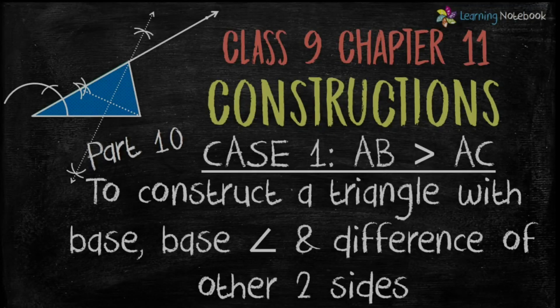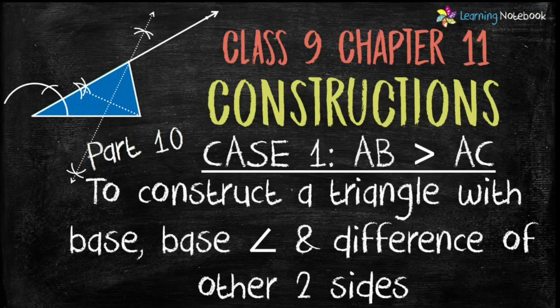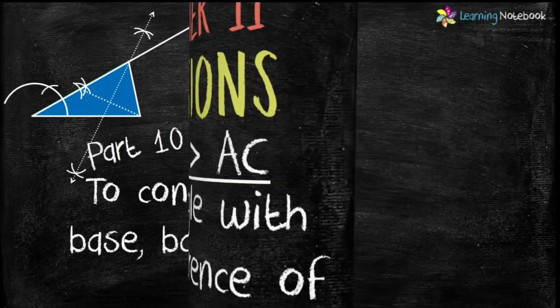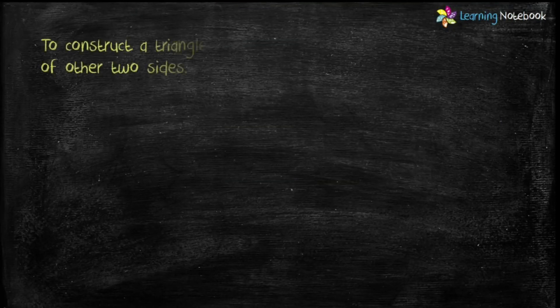Hello students, welcome to our channel Learning Notebook. In today's video we will do Part 10 of the chapter Constructions. In this part we will learn how to construct a triangle when the base, base angle, and difference of the other two sides are given. We will do Case 1, when AB is greater than AC.